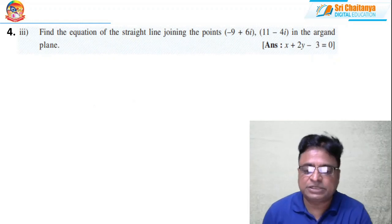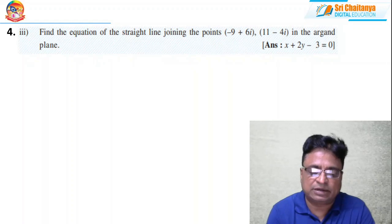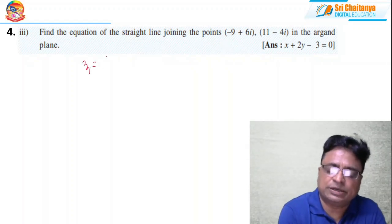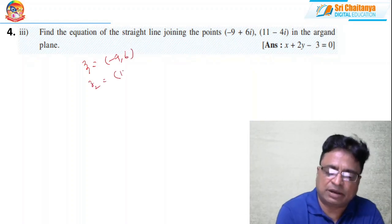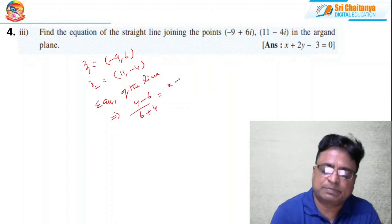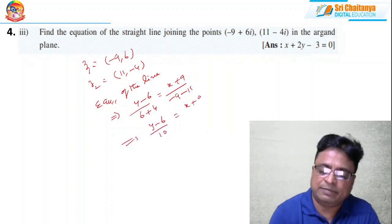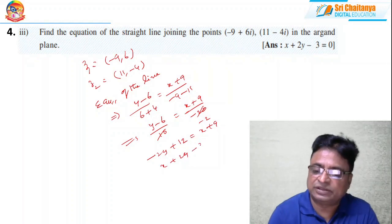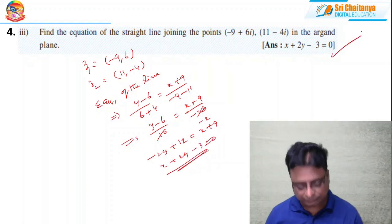Now the third part: find the equation of the straight line in the Argand plane passing through the given points. Take z₁ → (−9, 6) and z₂ → (11, −4). The equation of the line is (y − 6)/(6 + 4) = (x + 9)/(−9 − 11), so (y − 6)/10 = (x + 9)/(−20). This gives −2(y − 6) = x + 9, so −2y + 12 = x + 9, which simplifies to x + 2y − 3 = 0.